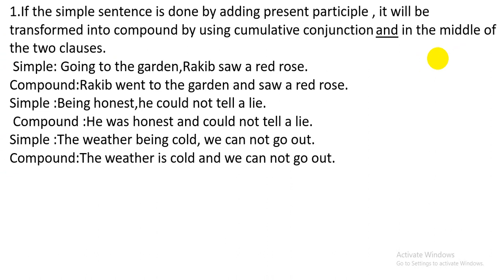Number one: if the simple sentence is done by adding a present participle, it will be transformed into a compound sentence by using the cumulative conjunction 'and' in the middle of the two clauses. Simple sentence: 'Going to the garden, Rakib saw a red rose.'